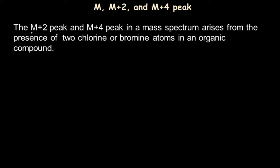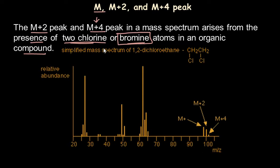In some mass spectra we may also observe M, M+2 and M+4 peaks together. This is because of the presence of 2 chlorine atoms in an organic compound. If we get a peak at M+4, it indicates a second chlorine atom. This is illustrated with a simplified mass spectrum of 1,2-dichloroethane, which contains 2 chlorine atoms, giving M, M+2 and M+4 peaks.